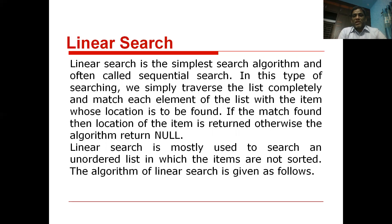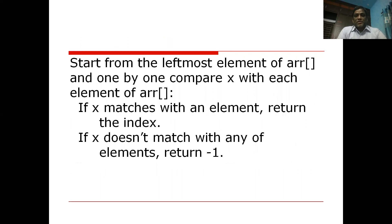In technical terminology, starting from the leftmost element of the array — where arr is the name of the list — we compare one by one. Let x be the element we are searching for. We compare x with each element of arr. If x matches with an element, we return the index and stop. If x does not match with any element, at the end we return minus one, indicating the element is not present in the array.